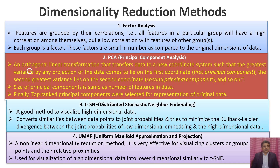PCA is an orthogonal linear transformation that transforms data to a new coordinate system such that the greatest variance by any projection of the data lies on the first coordinate — the first principal component — the second greatest variance lies on the second coordinate, the second principal component, and so on. The size of principal components is the same as the number of features in the data. Finally, top-ranked principal components are selected for representation of the original data. The next dimensionality reduction method is t-SNE, t-distributed stochastic neighbor embedding.